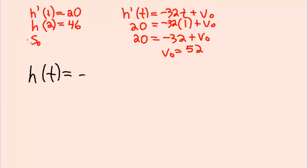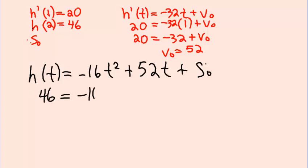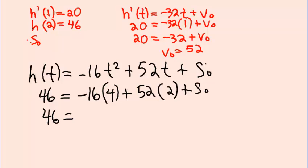h of t is negative 16t squared plus v-naught t, I can now throw in 52t, plus the initial height, which is what we're trying to figure out. Let's plug in what we know. We are given an initial condition here. h of 2 is 46. I'm going to put 46 in for h. I'm going to put 2 in for t. So, 2 squared gives me 4. 52 times 2.